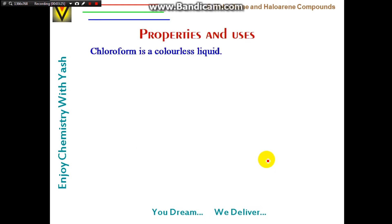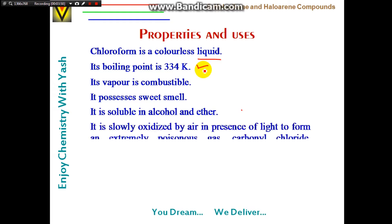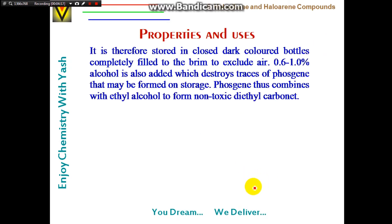Chloroform is a colorless liquid with a boiling point of 334 K. Its vapor is combustible and it possesses a sweet smell. It is soluble in alcohol and ether. Importantly, chloroform is slowly oxidized by air in the presence of light to form an extremely poisonous gas — carbonyl chloride (COCl₂), also known as phosgene.